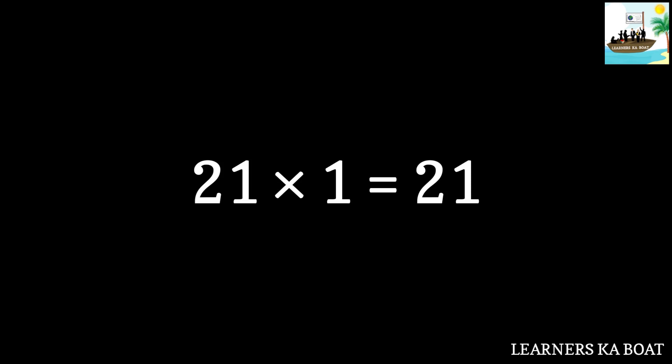21 ones are 21. 21 twos are 42. 21 threes are 63.